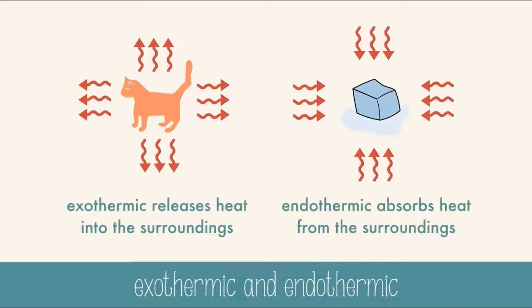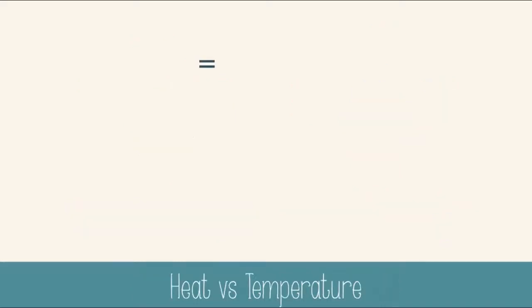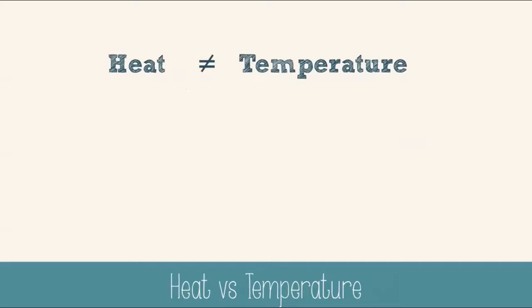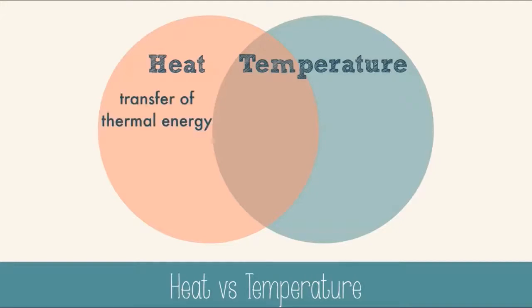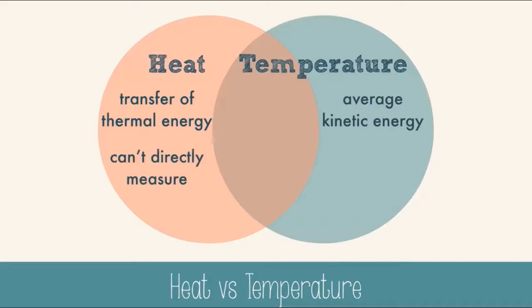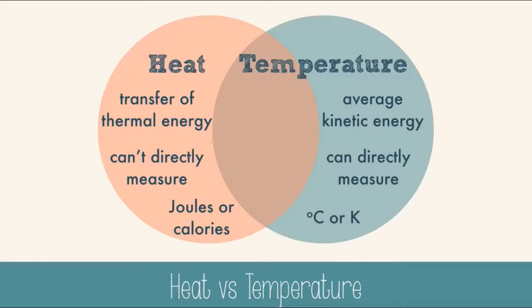Endothermic systems have a positive Q, and exothermic systems have a negative Q. It's important to note that heat and temperature are not actually the same thing. Heat is the transfer of thermal energy, whereas temperature is the average kinetic energy of a sample of particles. You can't directly measure heat — we don't have heat-o-meters. It's too complicated to calculate every possible source of heat energy in an object. But we can measure temperature with thermometers. You can use temperature as part of a calculation to find heat.